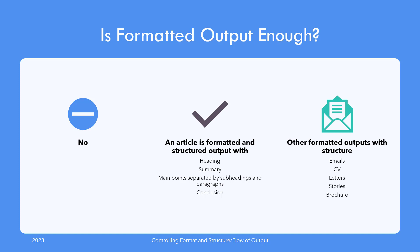Letters, emails, stories, newspaper articles, brochures, and CVs are all examples of formatted and well-structured outputs. With a well-instructed ChatGPT, all of these output types are within your reach.